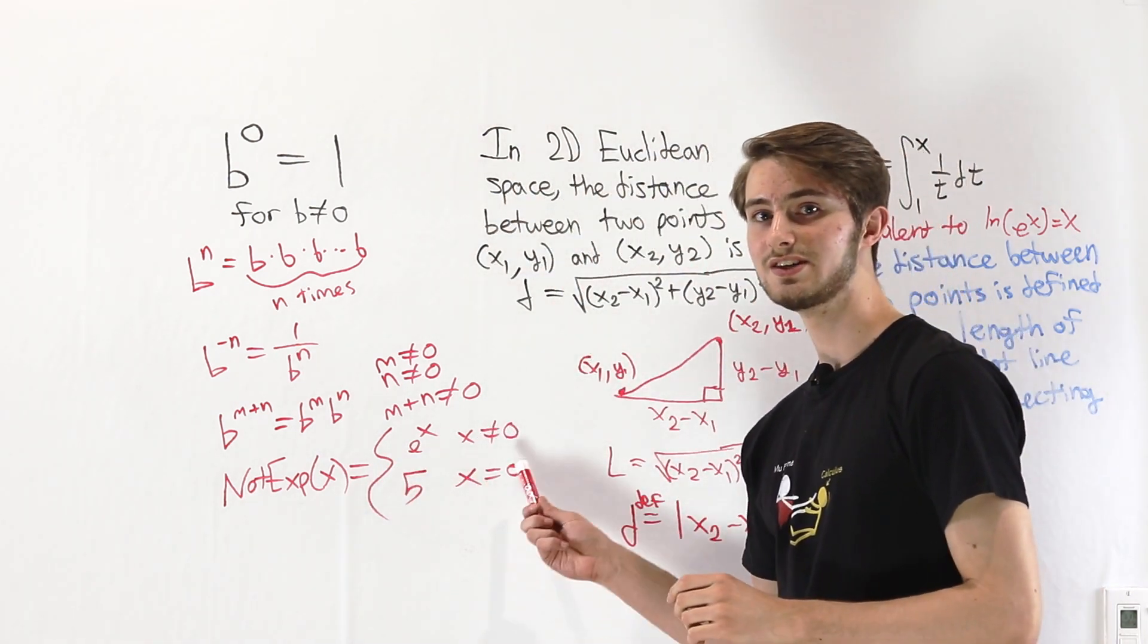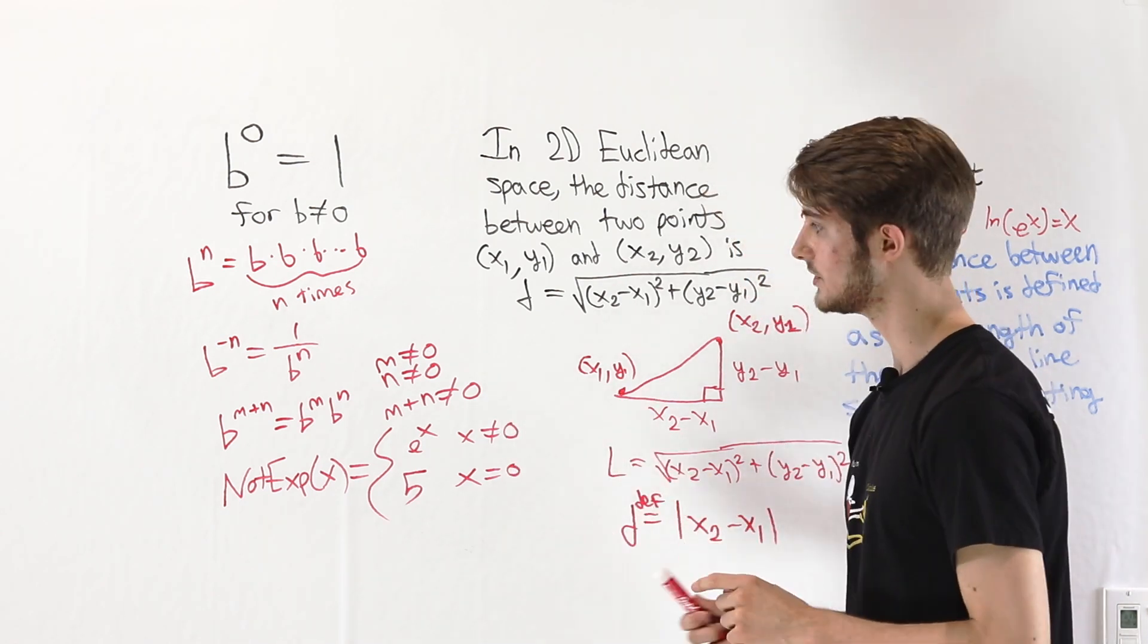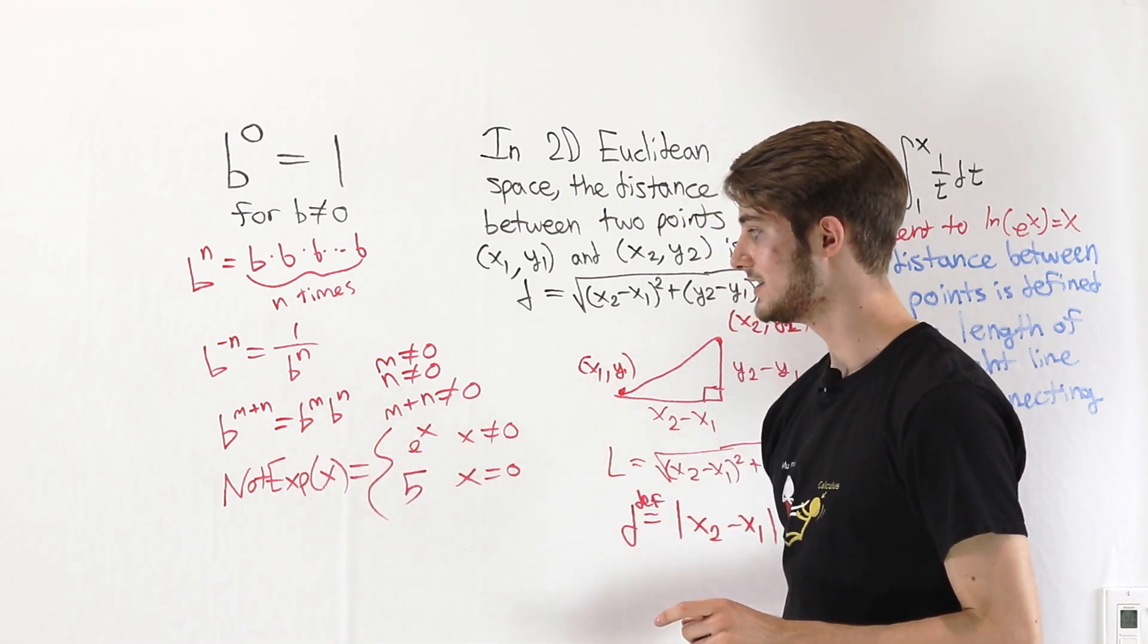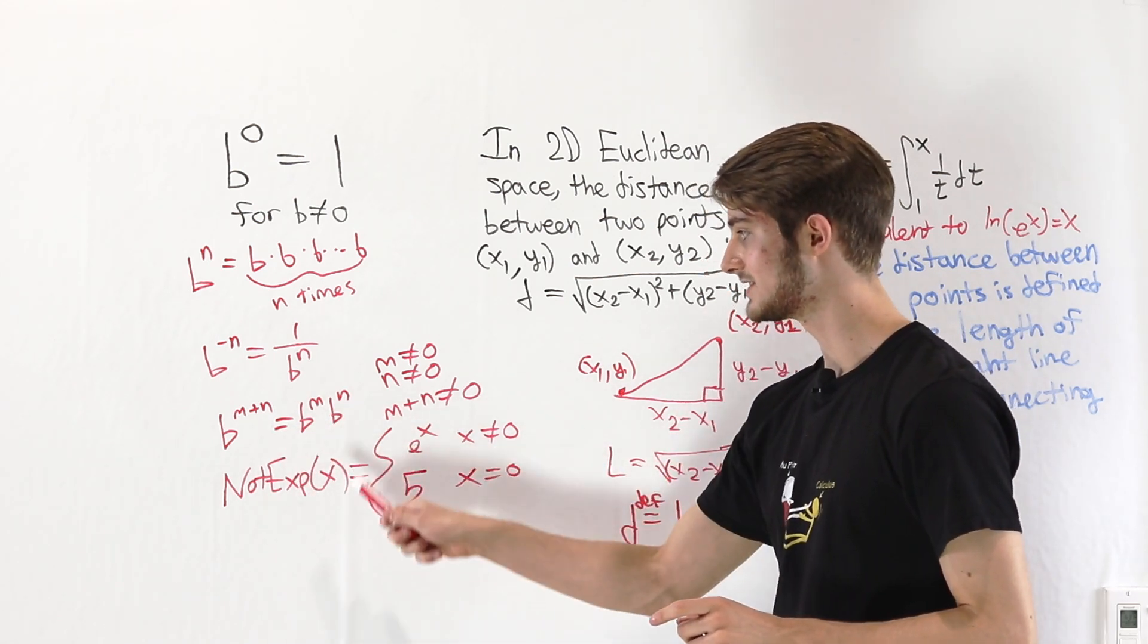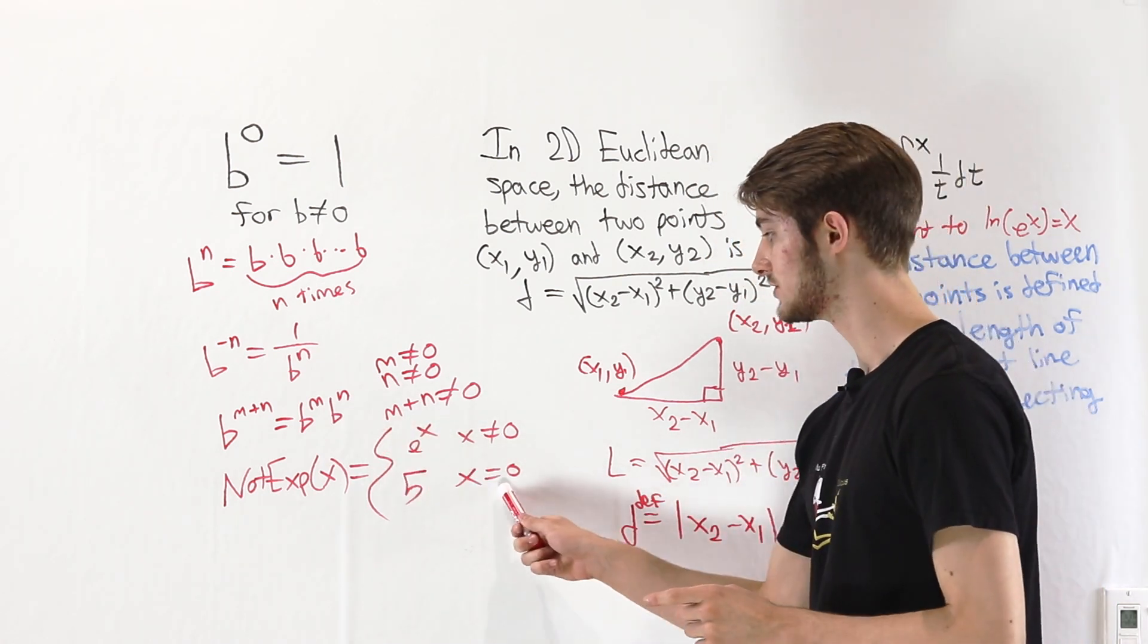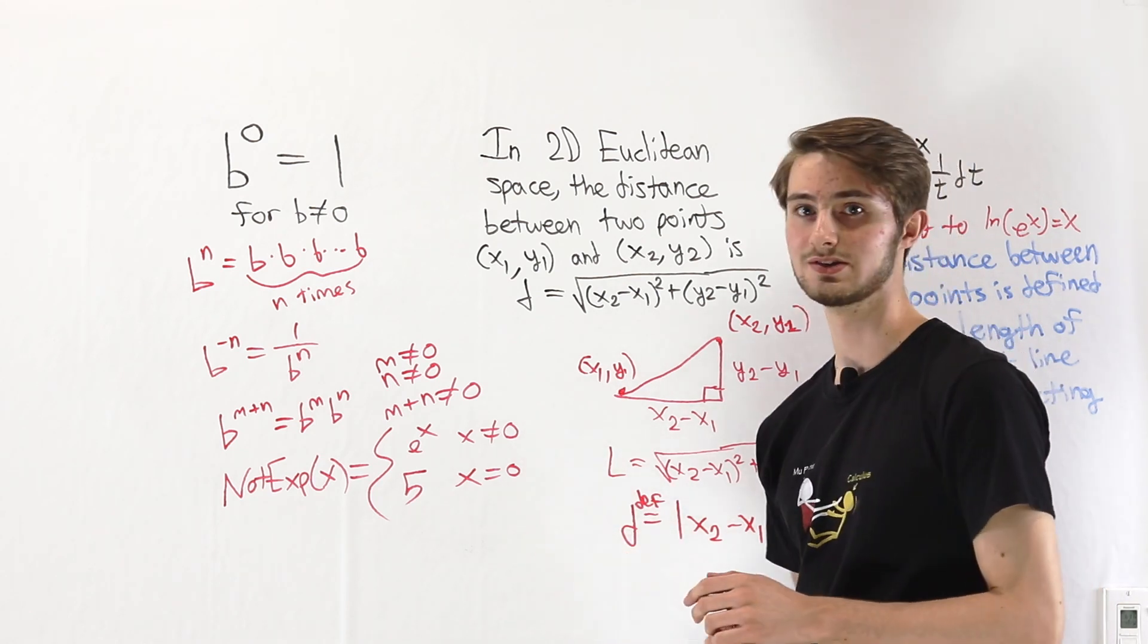This is a perfectly valid definition of a function and for all x not equal to 0 we could prove not exponential of (m plus n) equals not exp of m times not exp of n. But we can't use that to prove the value at 0 because it could be anything. That value is a definition.